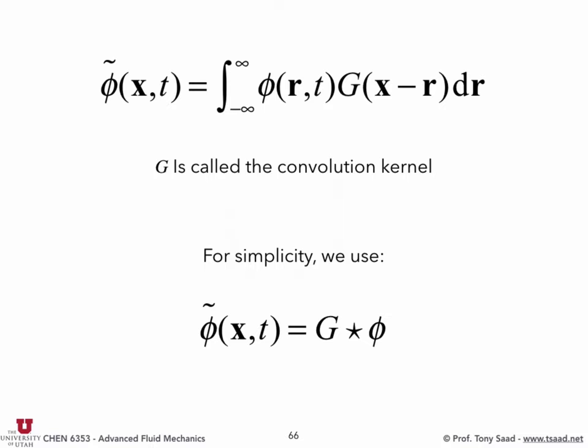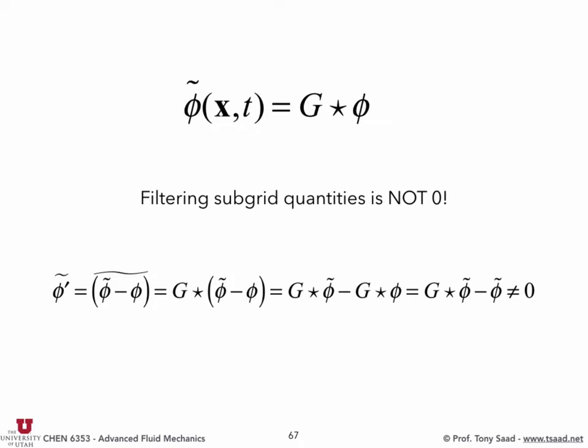If you keep making your sieve smaller and smaller, you would approach DNS, but your computational cost climbs exponentially — Reynolds number to the nine-fourths as we saw earlier. A consistent LES is one that tends to direct numerical simulation as the filter width approaches zero. Some implementations do not satisfy that property — you keep refining and still need a model — which means you're not doing a consistent LES.